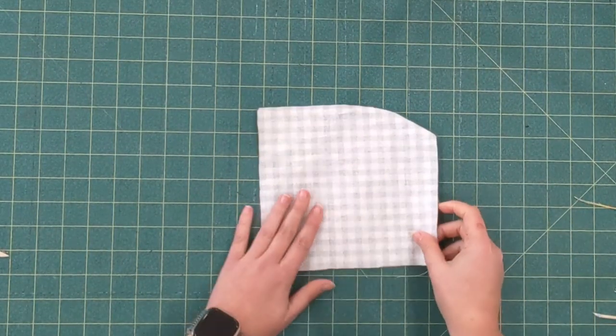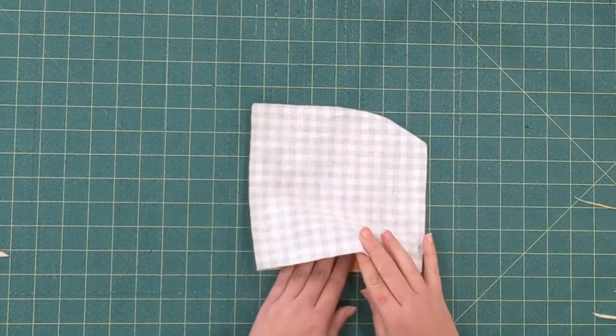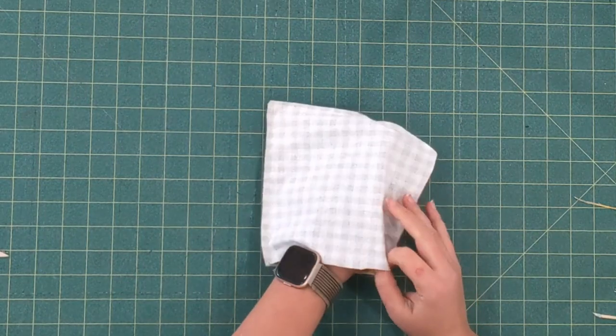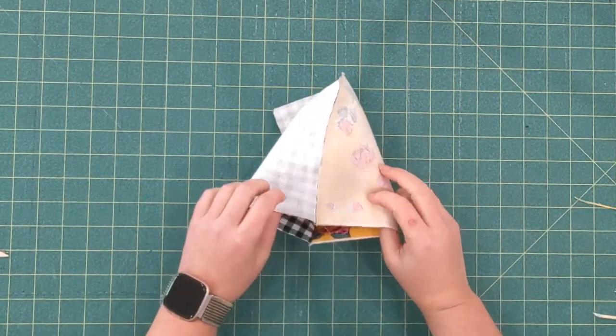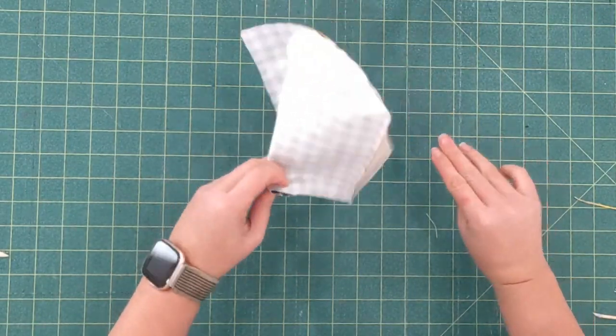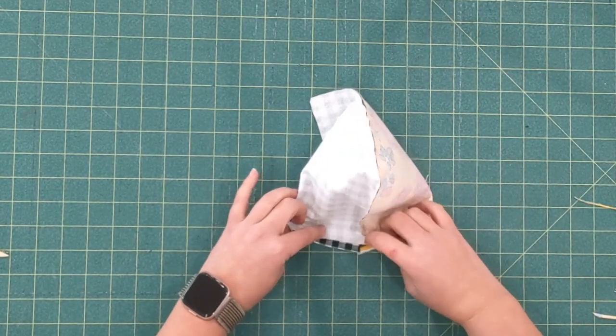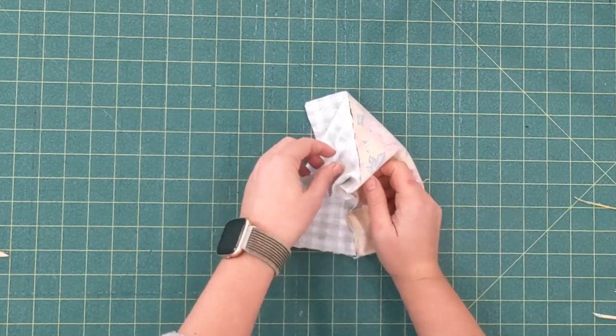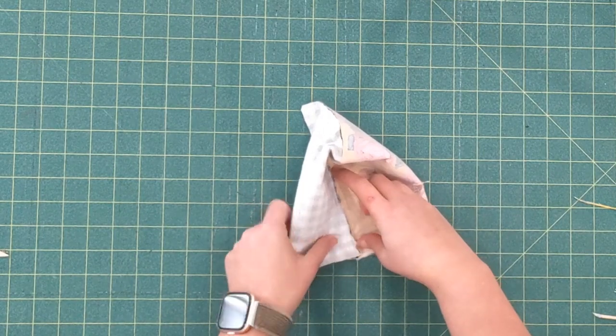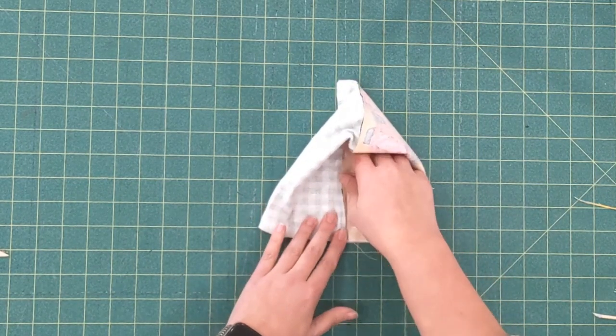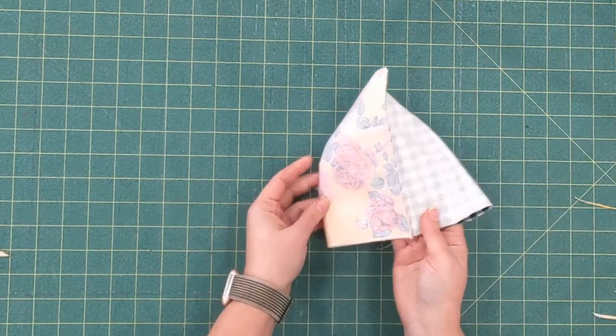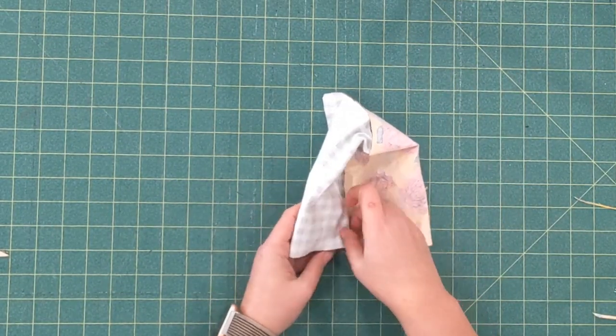Okay, so now this is the trickiest part. We're going to open like this and you're going to put your lining and main together. You're going to press this straight edge all the way up so that the seam line is touching.